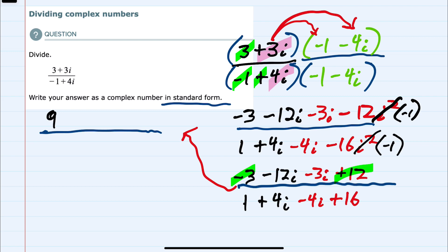And then the irrational parts, minus 12i minus 3i, combine to be minus 15i. In the denominator, the 1 and the 16 combine to be 17. And then we notice that the plus 4i and the minus 4i cancels out. So we're not going to have an i term in the denominator.